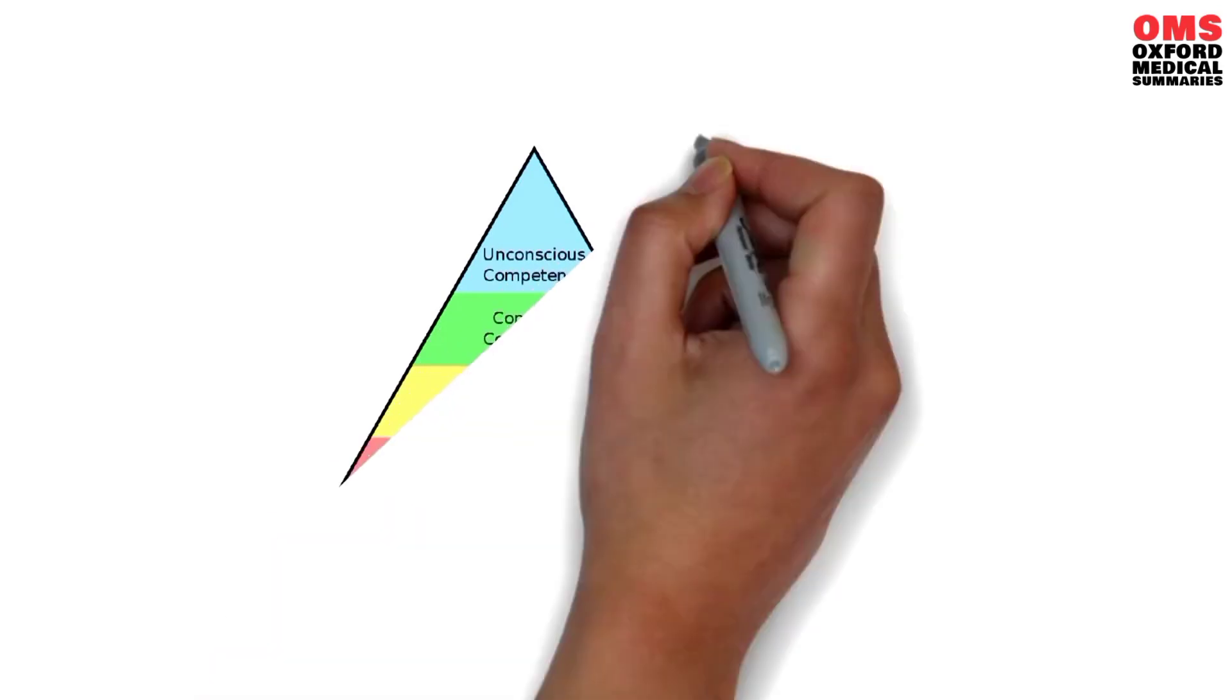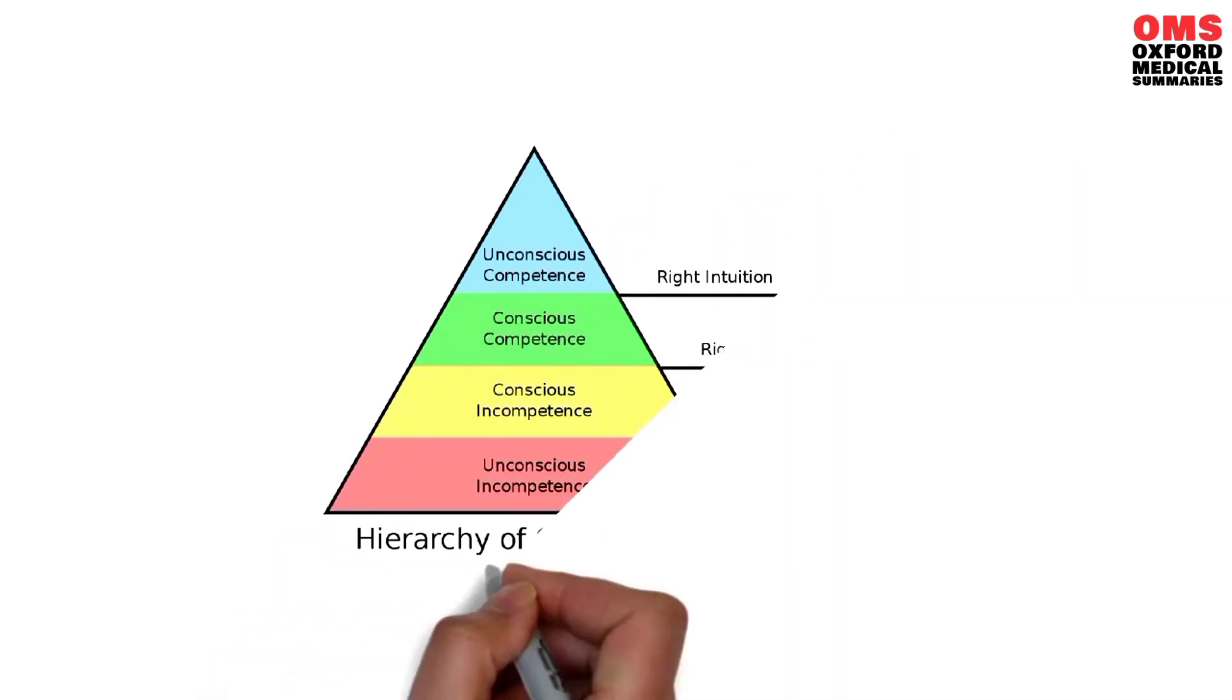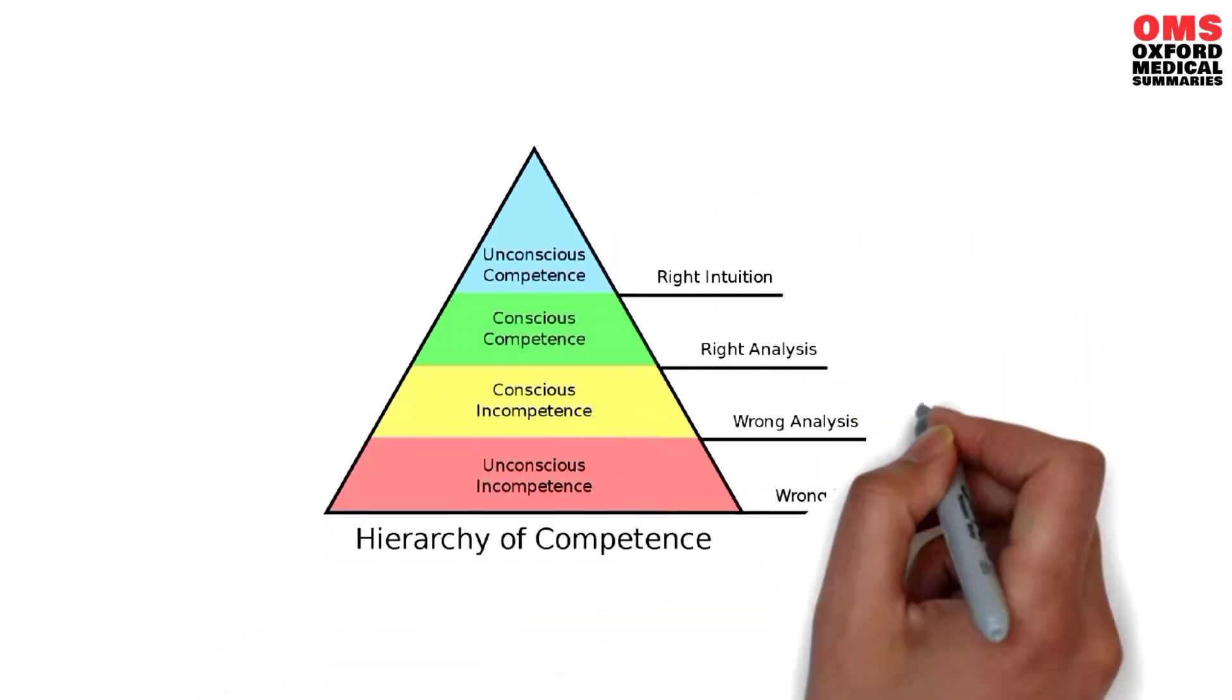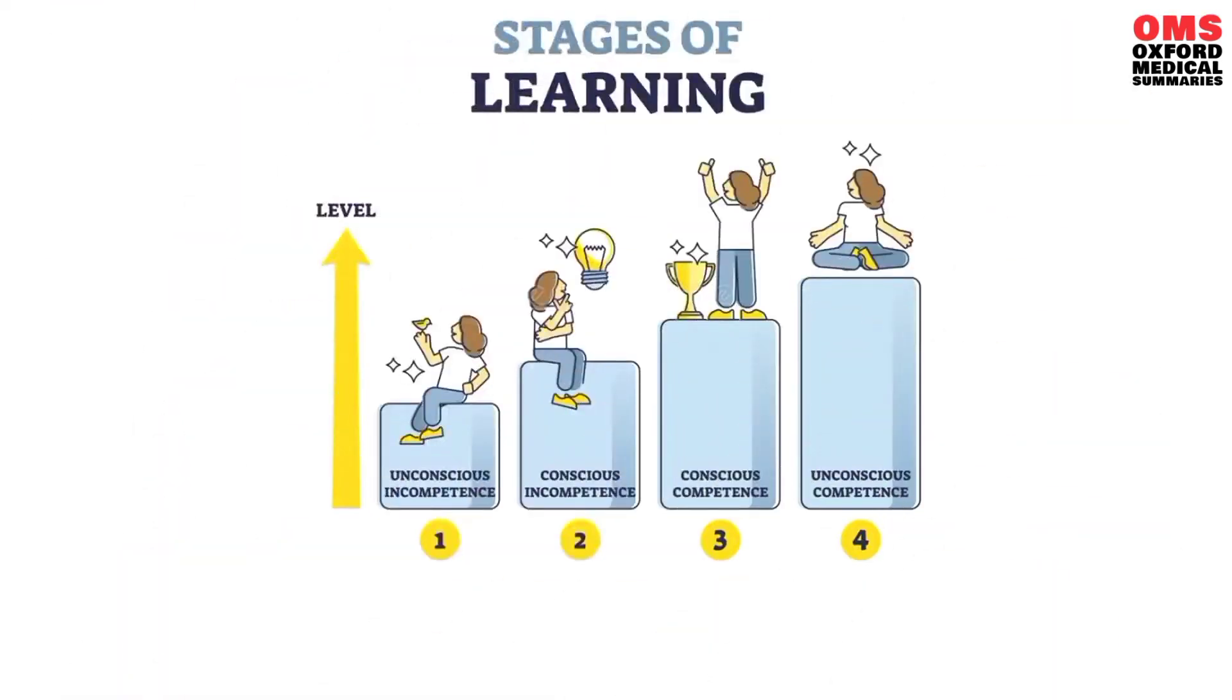Will Bowen, the author, outlines four stages of what he calls complaining competencies. These are essentially stages one moves through as they learn to become aware of complaining and how to reduce it.